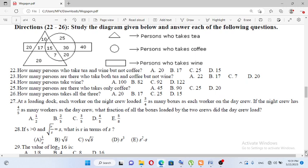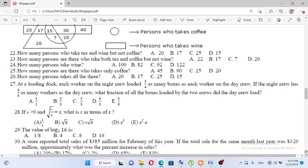Now the last one. At a loading dock, each worker on the night crew loaded three-fourths as many boxes as each worker on the day crew.